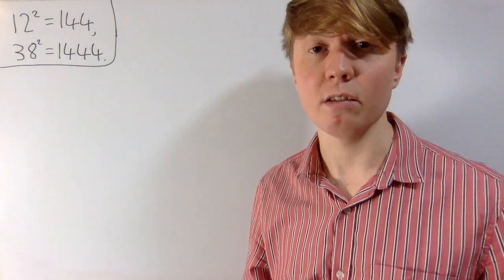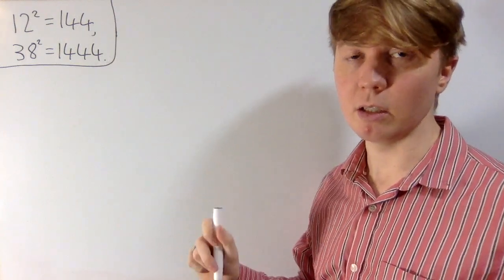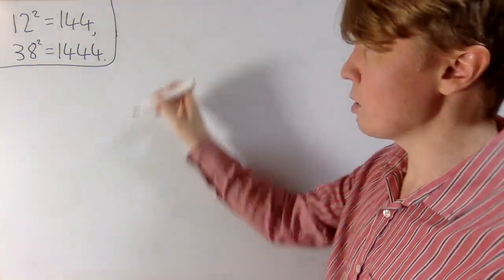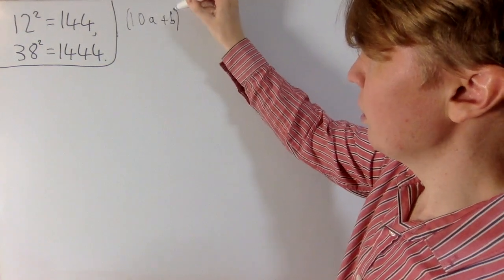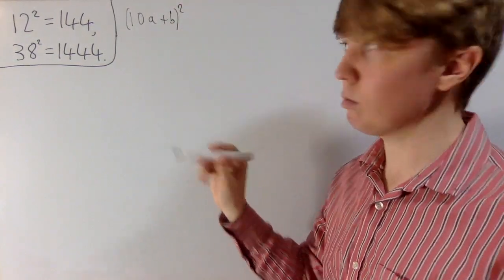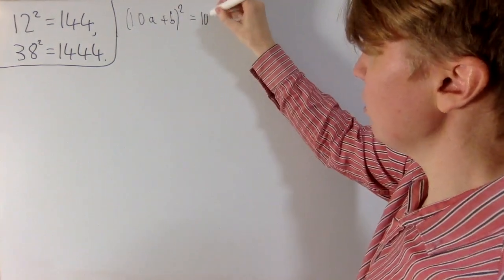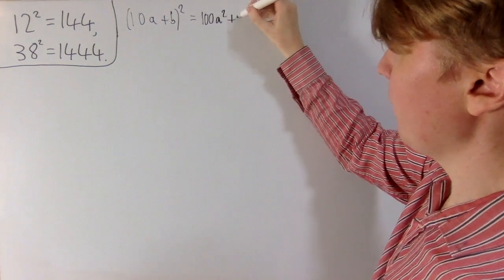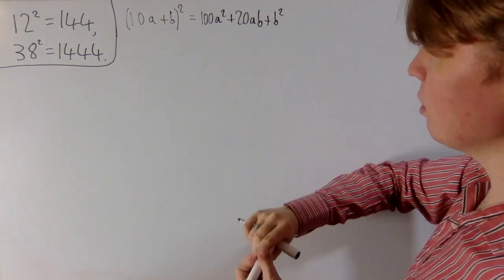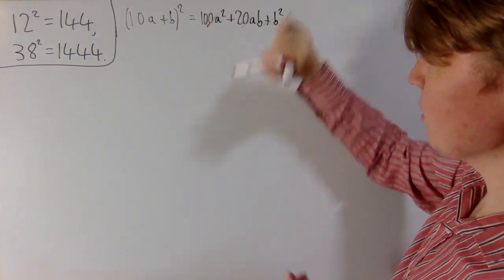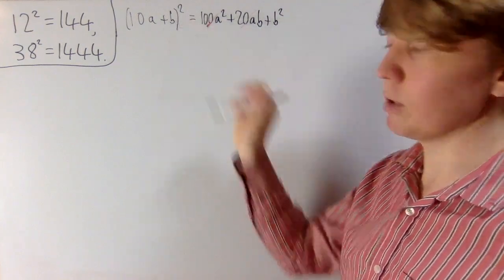To make a start towards answering this problem, let's think about what digits can appear at the end of a square number. If you consider 10a plus b — where a is in the tens column and b in the units — and square it, you get 100a² plus 20ab plus b². The first two terms are multiples of 10, so they don't affect the units digit; only b² determines it.